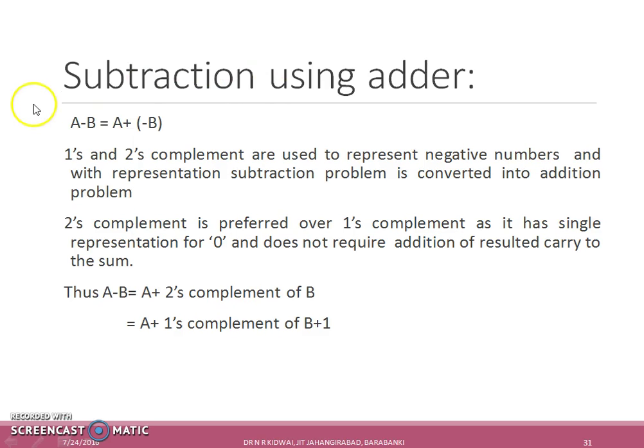We can also utilize full adders for subtraction of two numbers. A minus B can be set as A plus minus B. We remember that one's and two's complement are used to represent negative numbers and with this representation subtraction problem is converted into an addition problem. It should be noted that two's complement is preferred over one's complement in implementations as it has single representation for zero and it does not require addition of resultant carry to the sum.